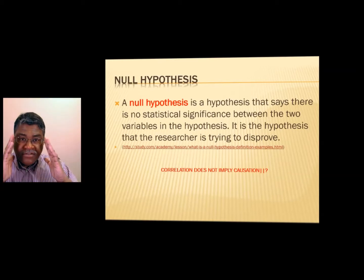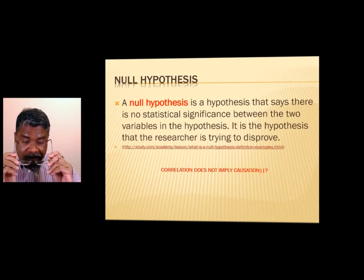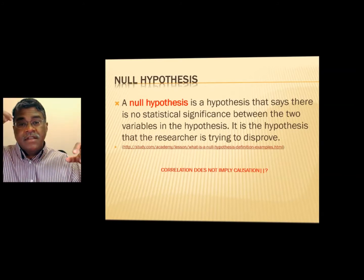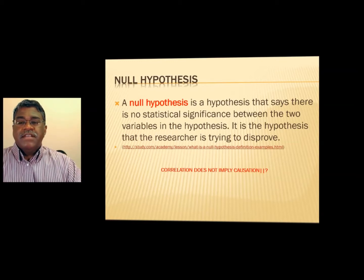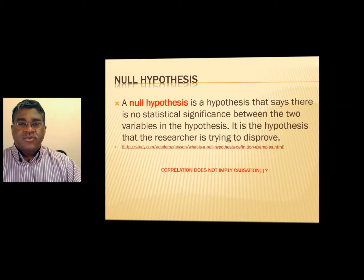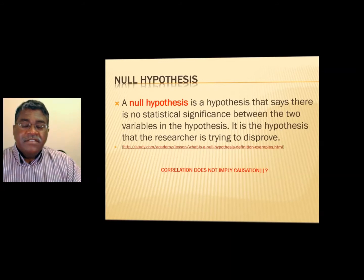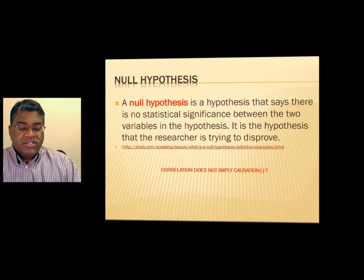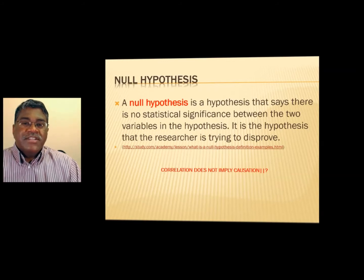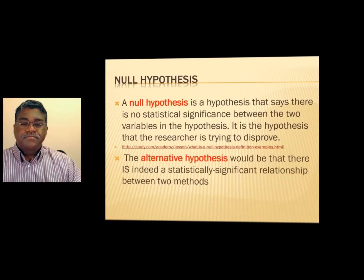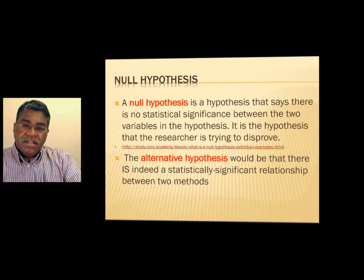At this point, it's important to say: correlation does not imply causation. If two unrelated things happen together, one doesn't have to cause the other. Even if there is some statistical correlation between them, just because two things happen and the numbers show some significance does not imply that one caused the other, or that one is downstream of the other.